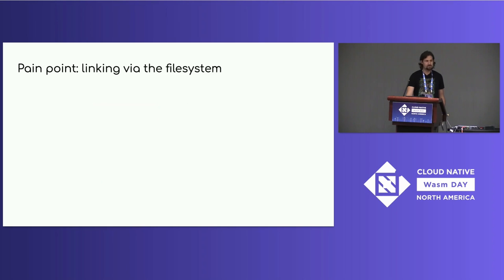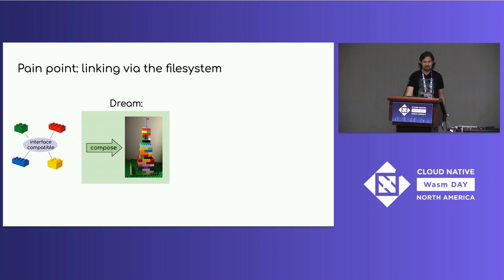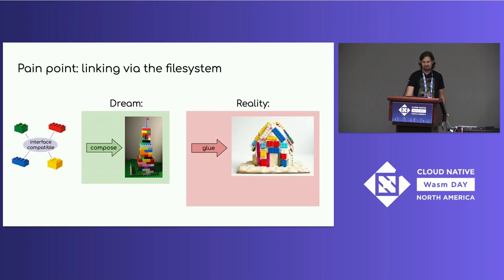Our first pain point is linking via the file system. A common experience is you have some software components and it seems like they should be interface-compatible — I should be able to snap them together and build a tower of beautiful software. But the reality involves a lot more glue code, because in addition to explicit interfaces, there's a file system that everything is colliding with, and a lot of that glue code is working around that.